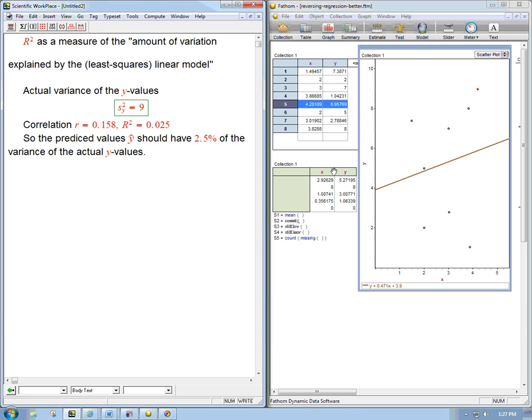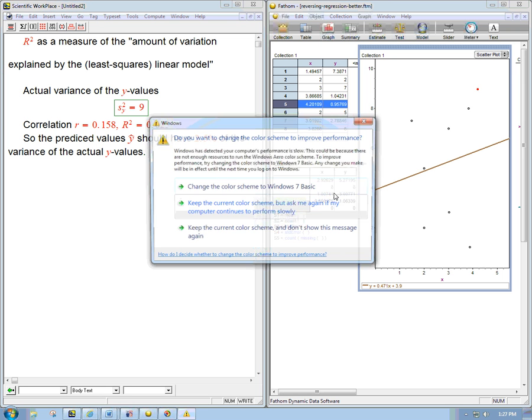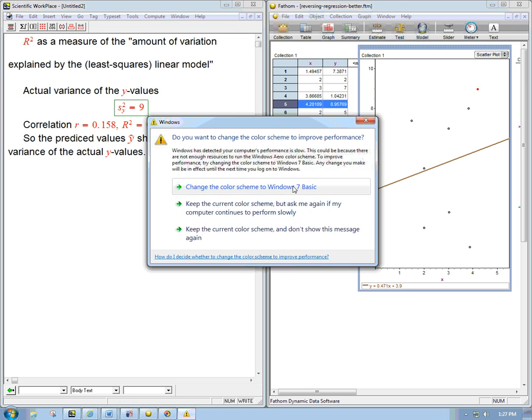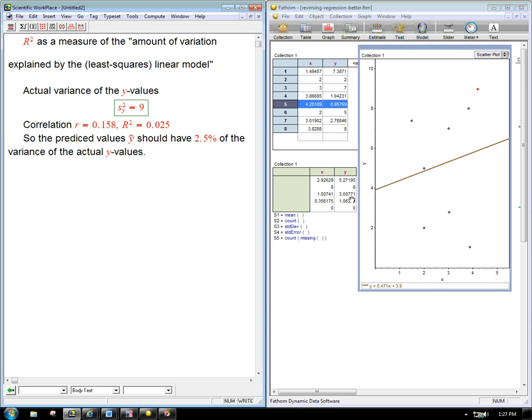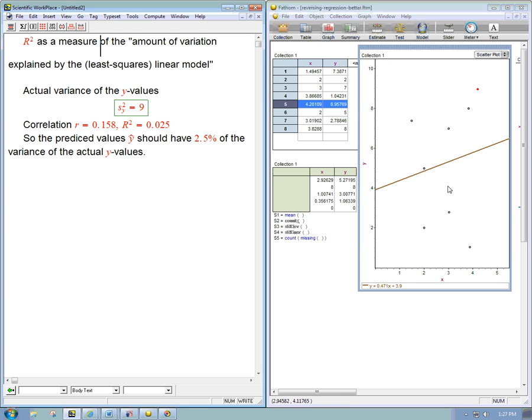So here's some of the important figures. I've got here in the summary stats, it's a little bit tricky to see it on Fathom, but the key numbers are: X, the standard deviation, is 1, and Y, the standard deviation, is 3. And the R value, it turns out, I don't have it up here, but I copied it over here. The little r turns out to be 0.158, and so R-squared is about 0.025.